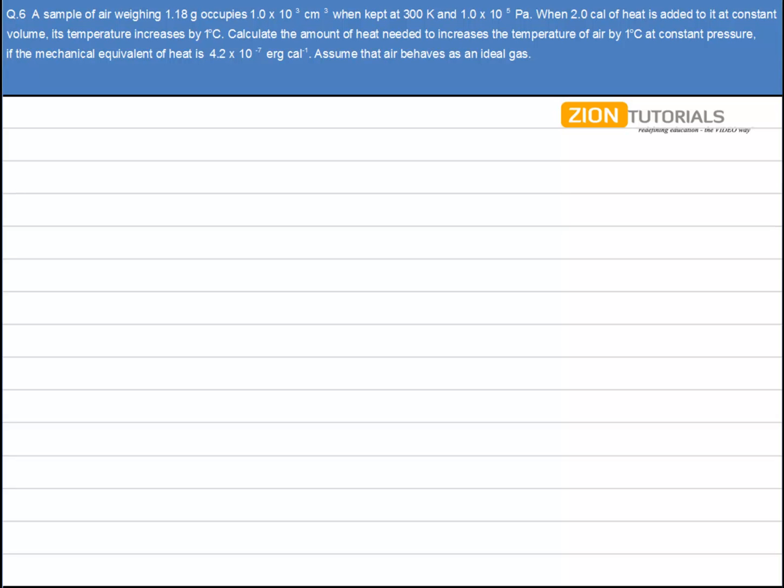We have to calculate the amount of heat needed to increase the temperature of air by 1 degree Celsius at constant pressure. It is given that the mechanical equivalent of heat is 4.2 x 10^-7 erg per calorie, and assume that air behaves as an ideal gas.